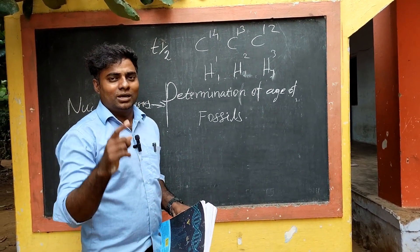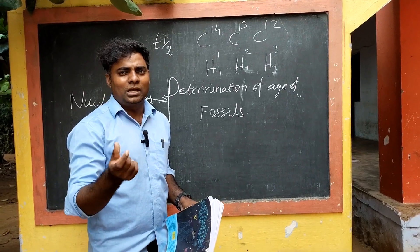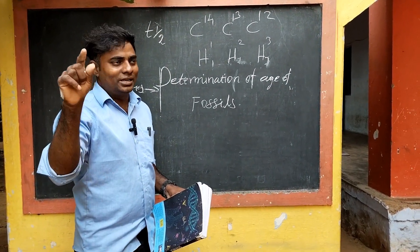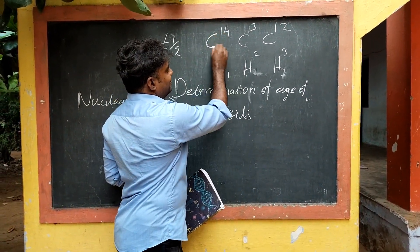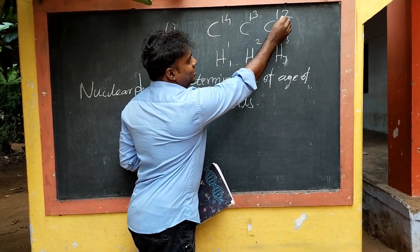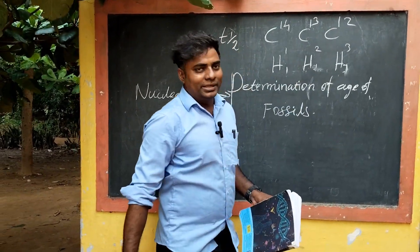We have to get rid of isotopes. In hydrogen, hydrogen is a lesson. Now, carbon has isotopes: carbon-14, carbon-13, and carbon-12.